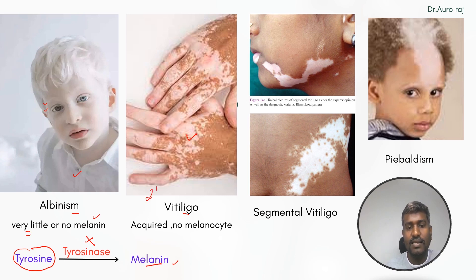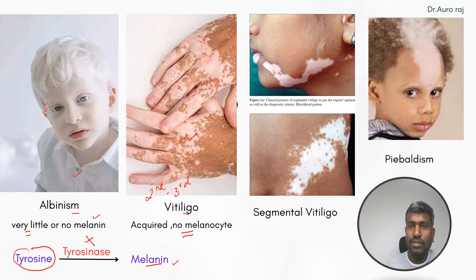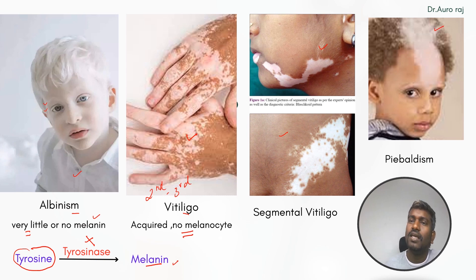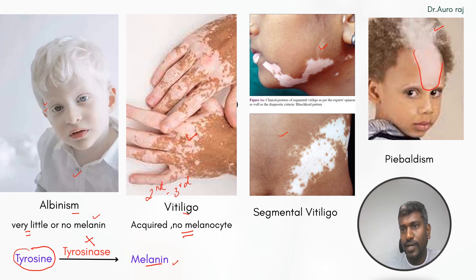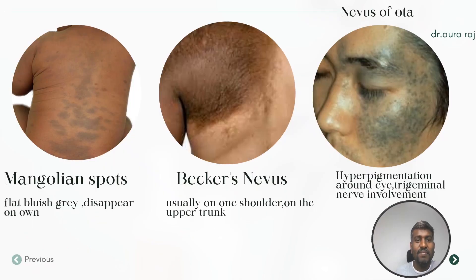Number two is vitiligo — remember vitiligo is an acquired condition seen in the second and third decade of life. In vitiligo there are no melanocytes. These are images of segmental vitiligo — try to revise these. Next is piebaldism: remember there are white patches in the forehead as well as white forelock.